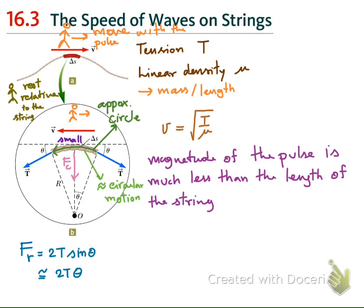Next, we will use Newton's second law: F equals ma. In centripetal motion, this is equal to mv squared over R. Here, v is the velocity of the element when it passes the observer. This means that for the observer at rest relative to the string or the earth, this value v will give us the velocity of the wave on the string.